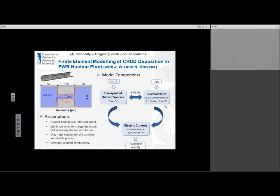Her model itself is based on three things: transport of dilute species, electrostatics looking at space charge densities, and looking at the electric current coupled with the fluid flow velocity. Some of the assumptions that she's made is grounding the boundaries electrically, both at the inlet and the outlet. She assumes that the EDL is too small to change the shape and it's not reforming the ion distribution. She only used Tafel kinetics for the cathodic and anodic processes. She uses both Butler-Volmer as well as Nernst equations within the model.